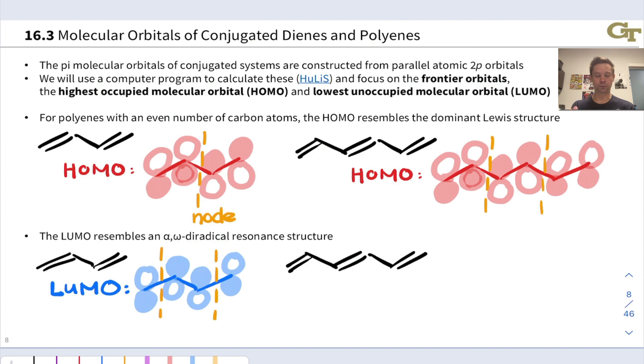This trend continues with the terminal atoms, the alpha and omega atoms, having lobes that are by themselves. Then we have constructive interference for adjacent lobes alternating up, down, up, down, or shaded, unshaded, shaded, unshaded.